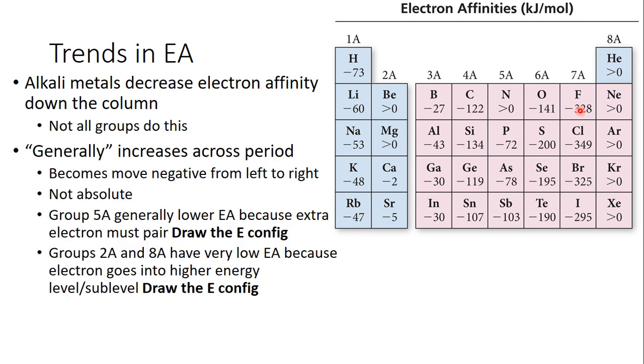As we go across the period, they generally increase, but there are a lot of exceptions. One exception is 5A has a lower electron affinity because the extra electrons have to pair with something. And if you want to see that for yourself, draw the electron configuration. Same thing for 2A and 8A. They have very low electron affinity because you have to go into a higher energy shell to add an electron. Again, draw out your configuration to prove this for yourself.